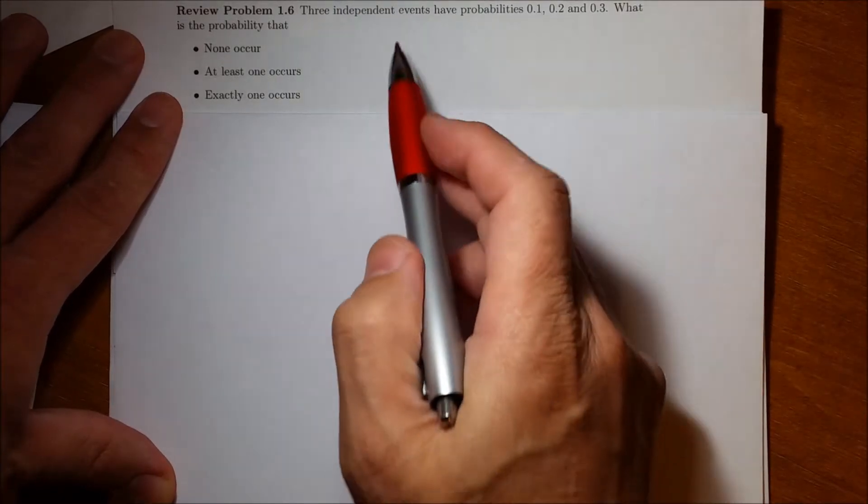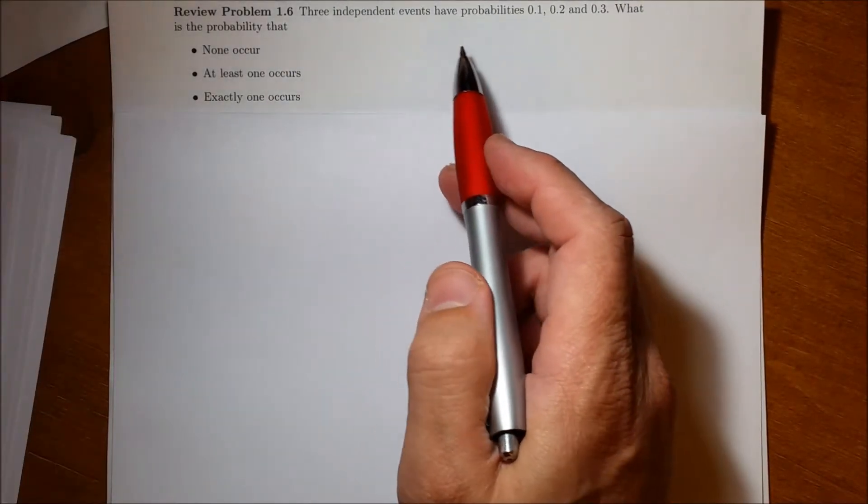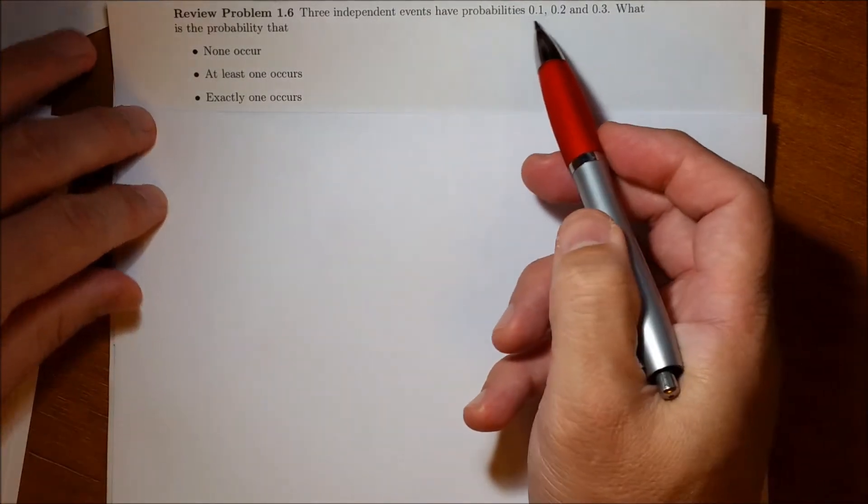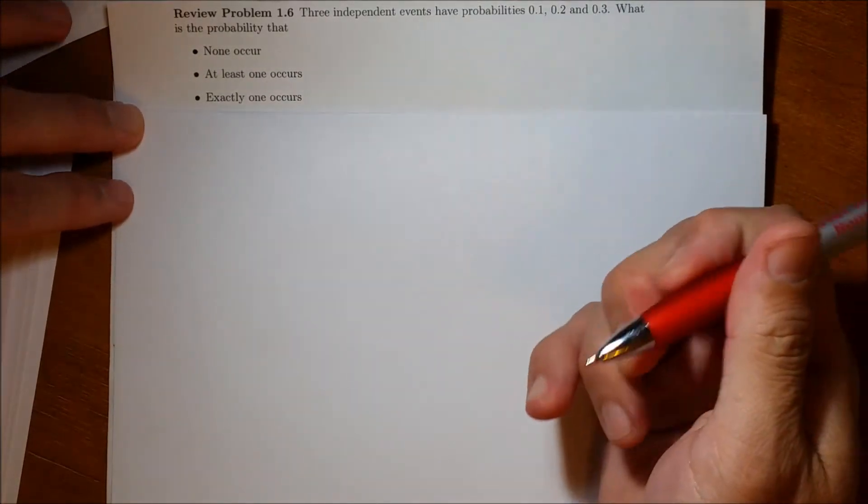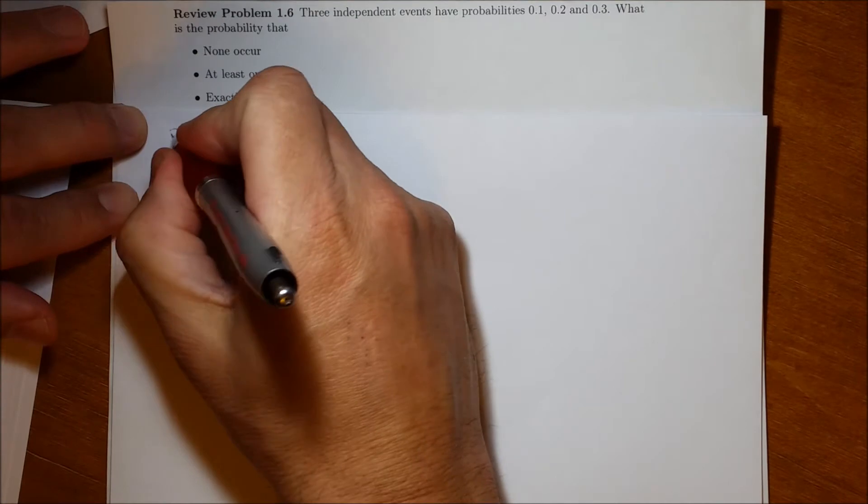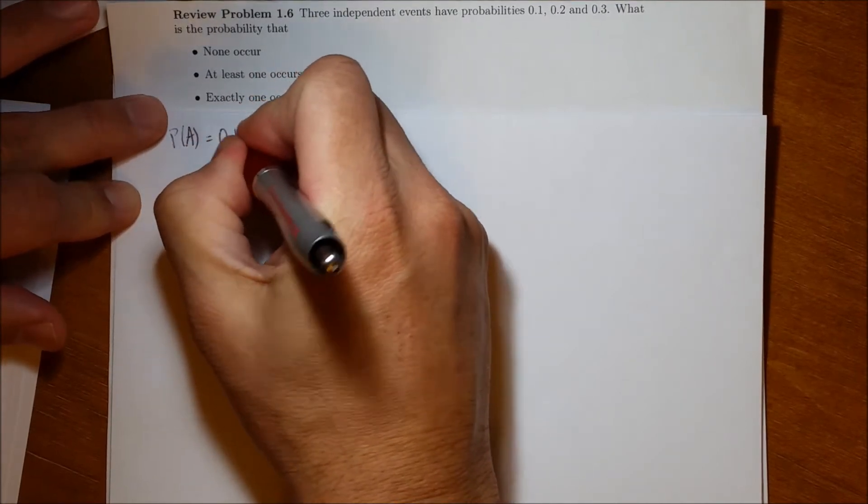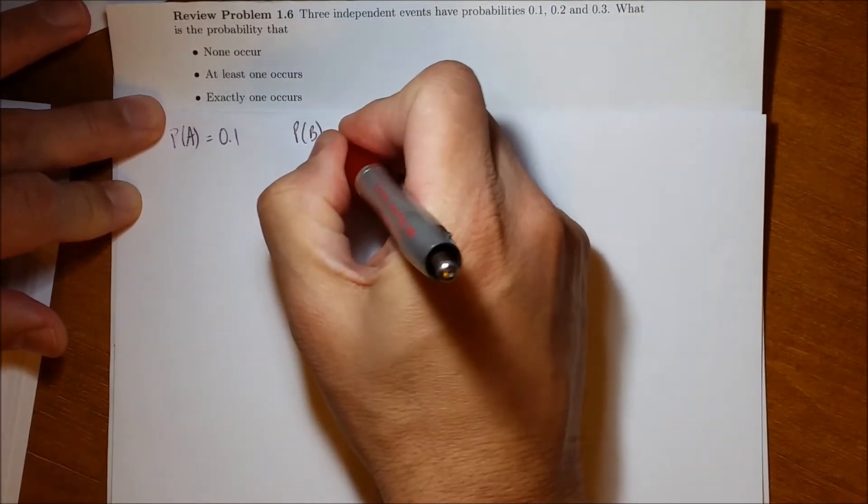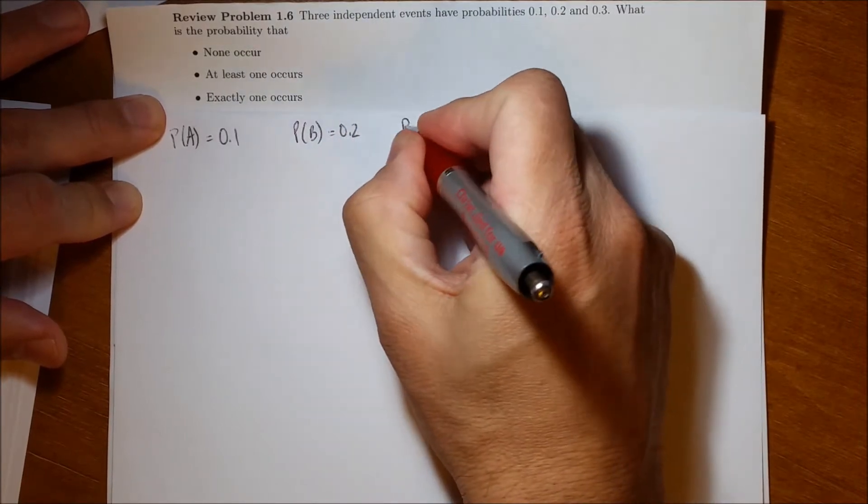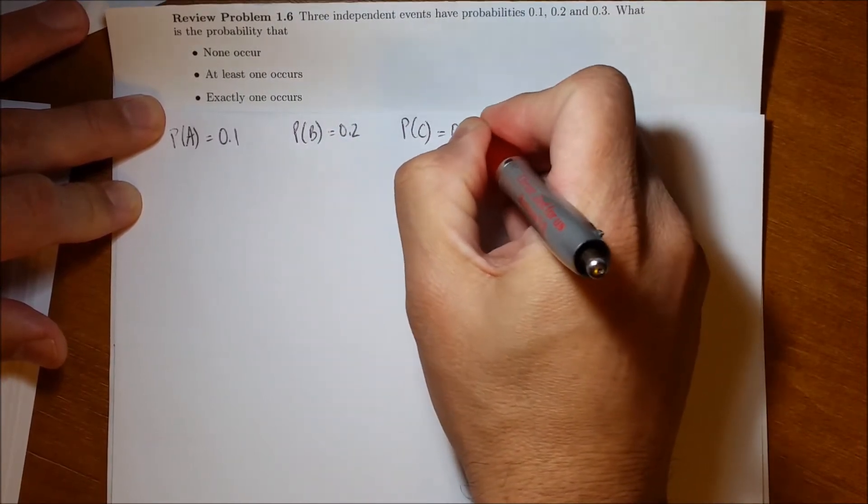Okay, for this problem we have three different independent events that each have probabilities 0.1, 0.2, and 0.3. So let's say the probability of A is 0.1, the probability of B is 0.2, and the probability of C is 0.3.